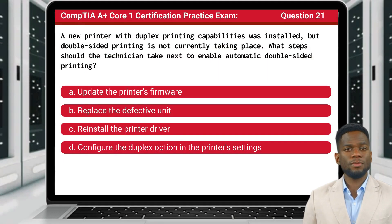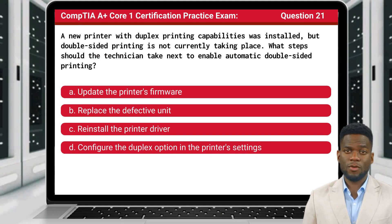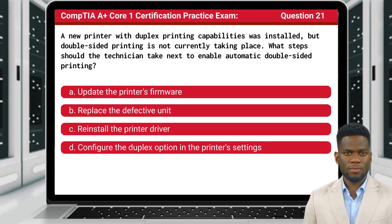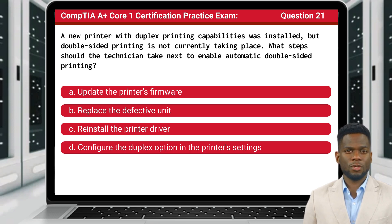Question 21. A new printer with duplex printing capabilities was installed, but double-sided printing is not currently taking place. What steps should the technician take next to enable automatic double-sided printing?